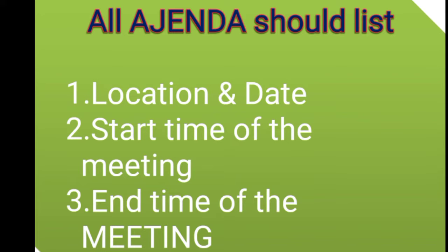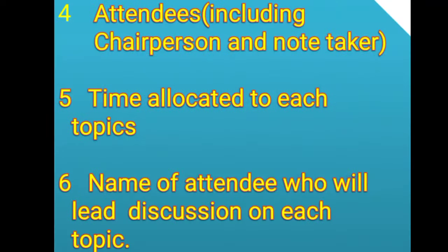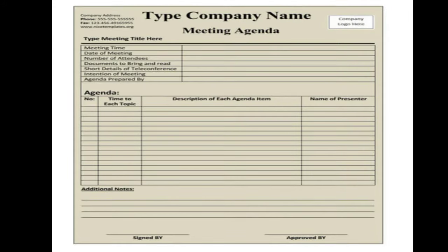What things should be in the agenda? First, location and date of the meeting. Second, starting time of the meeting. Third, ending time of the meeting — for example, clearly mentioning 2 PM to 5 PM. Fourth, attendees including chairperson and note taker. Fifth, time allocated to each topic. Sixth, name of the attendee who will lead discussion on each topic.